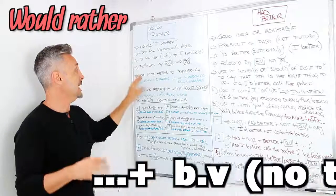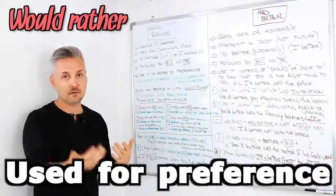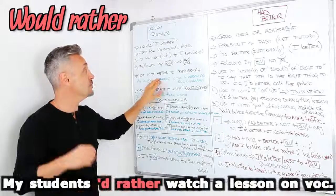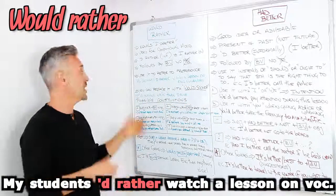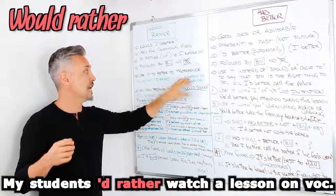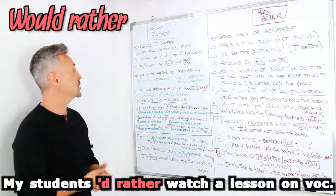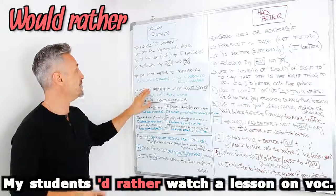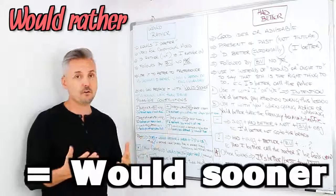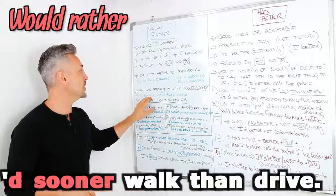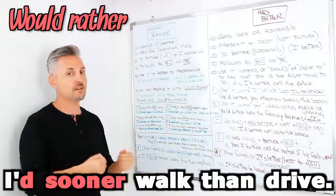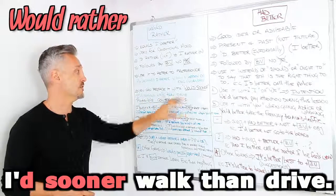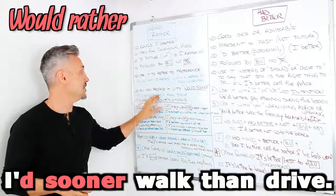It is used to refer to a preference — like I said before, 'I prefer doing something'. So, for example: 'My students would rather watch a lesson on English vocabulary' — so they prefer to watch a lesson on English vocabulary. You can also replace it with 'sooner'. For example: 'I'd sooner walk than drive.' I don't like driving in Rome, there is too much traffic, so 'I'd sooner walk than drive' — which is the same as saying 'I'd rather walk than drive'.